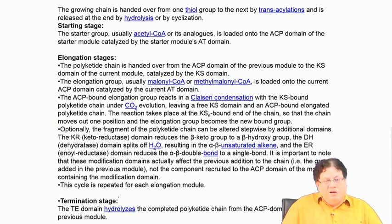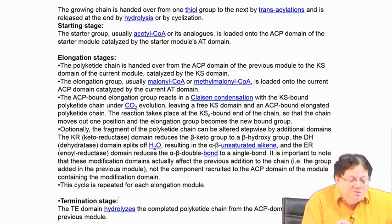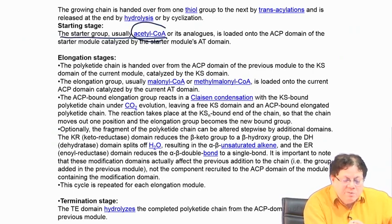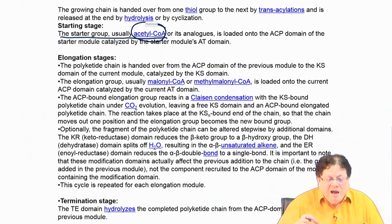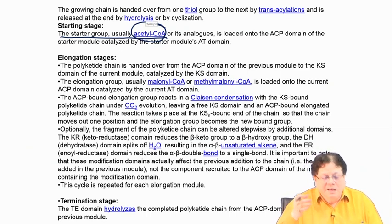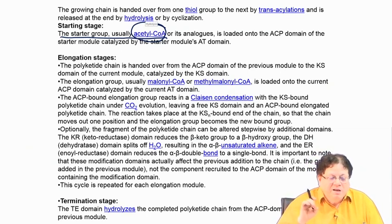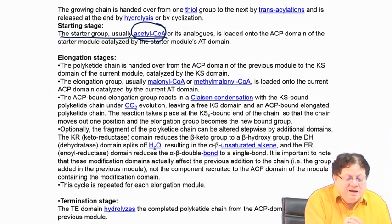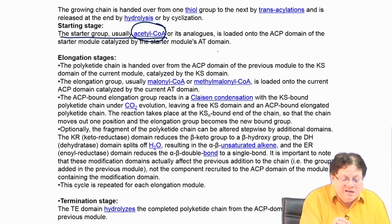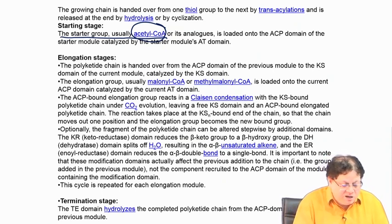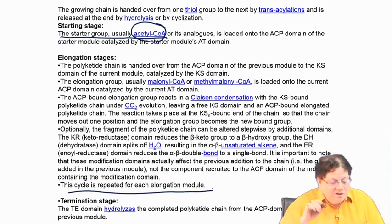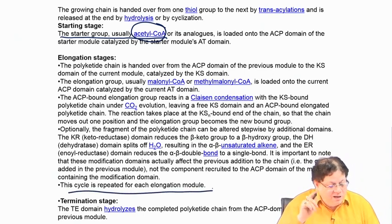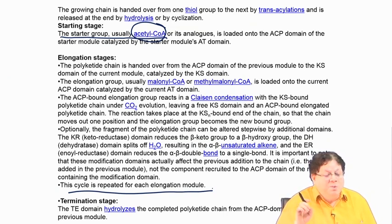If given a natural product you can do a retro-biosynthesis. The starter group is usually acetyl-CoA, but it may vary — for example, in erythromycin biosynthesis the starter unit was propionyl-CoA and the extension unit was methylmalonyl-CoA. The elongation cycle is repeated for each elongation module until the desired length is obtained, and then termination occurs.